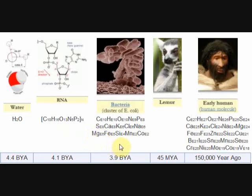The bacteria cluster: 15 elements, a billion atoms. And the human: 26 elements and an octillion atoms.